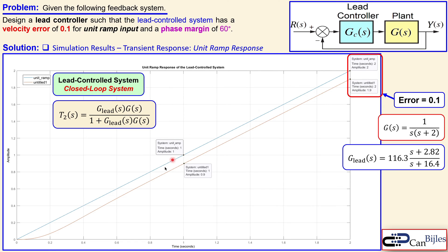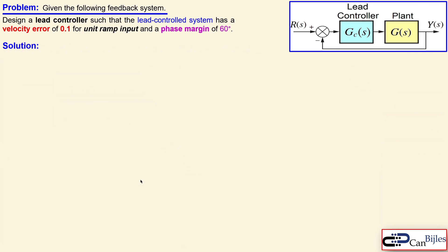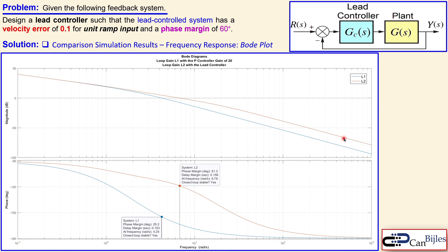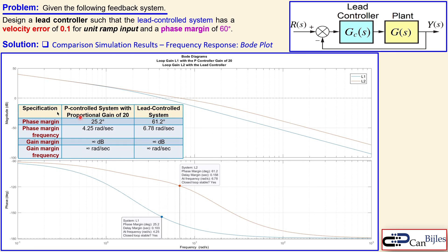The unit ramp response for the lead-controlled system shows the input at 2 and the output at 1.9, again confirming the velocity error of 0.1. Comparing frequency responses, the lead controller loop gain L2 (orange) is shifted up in magnitude relative to the P controller loop L1 (blue), the phase is significantly higher, and the phase margin frequency has shifted to the right.